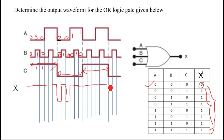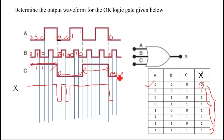Now C is 1 for this whole duration, so just make the output 1 for this whole duration — no need to check A or B. Next, C is 0 for the rest of the duration, so check B: B is also 0, then check A: A is also 0 for this small duration, so output becomes 0. Then C is 0 but B is 1, so output becomes 1.